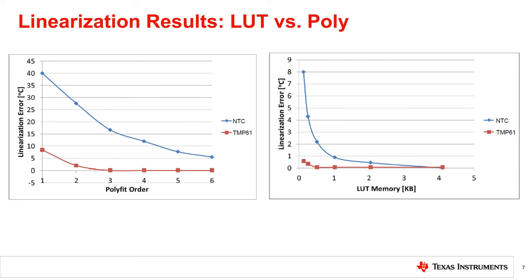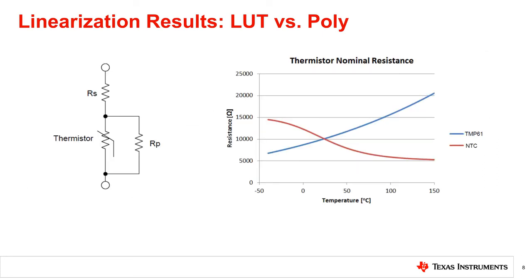An alternative way to reduce linearization error is by using hardware. Note that it is just as common to see thermistor linearization in hardware as we see in software. An example of this circuit is shown on the left side of the screen, and its equivalent resistance versus temperature profile is shown in the graph. There are two basic ways to linearize a thermistor in hardware: one being voltage mode and the other resistance.